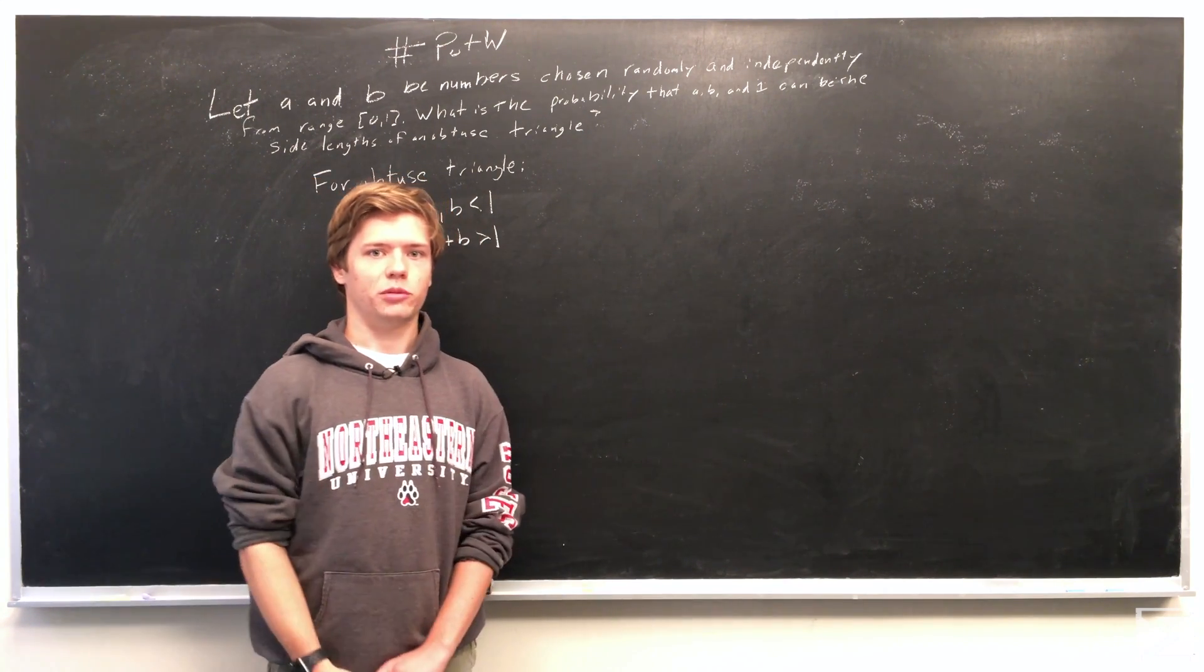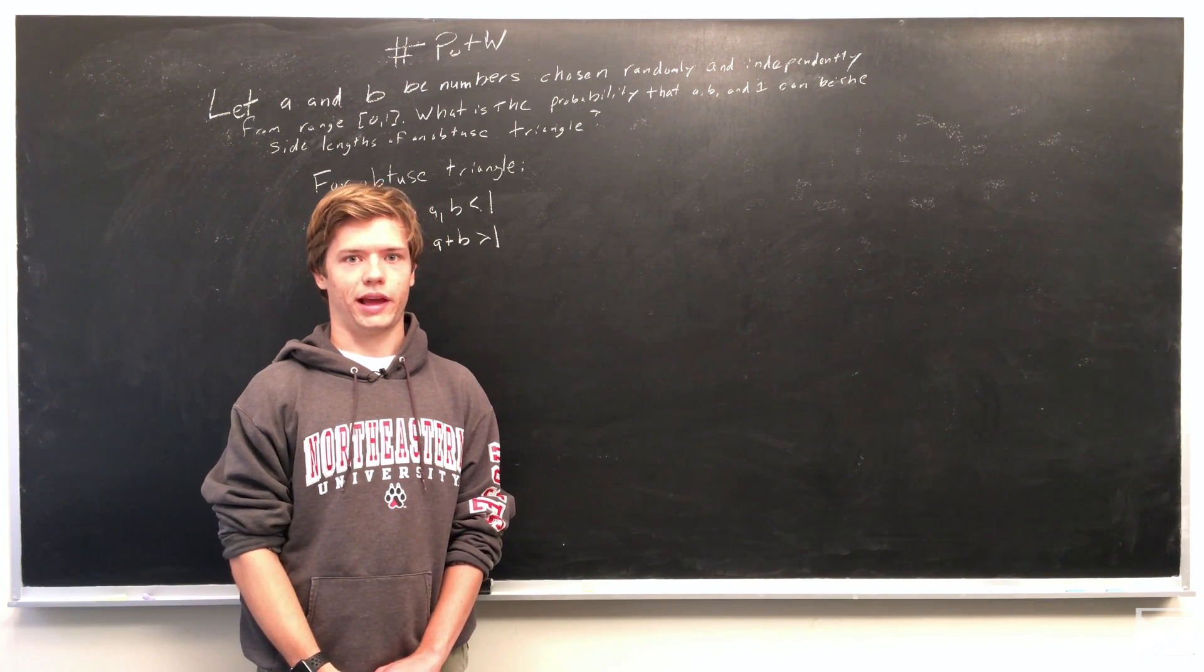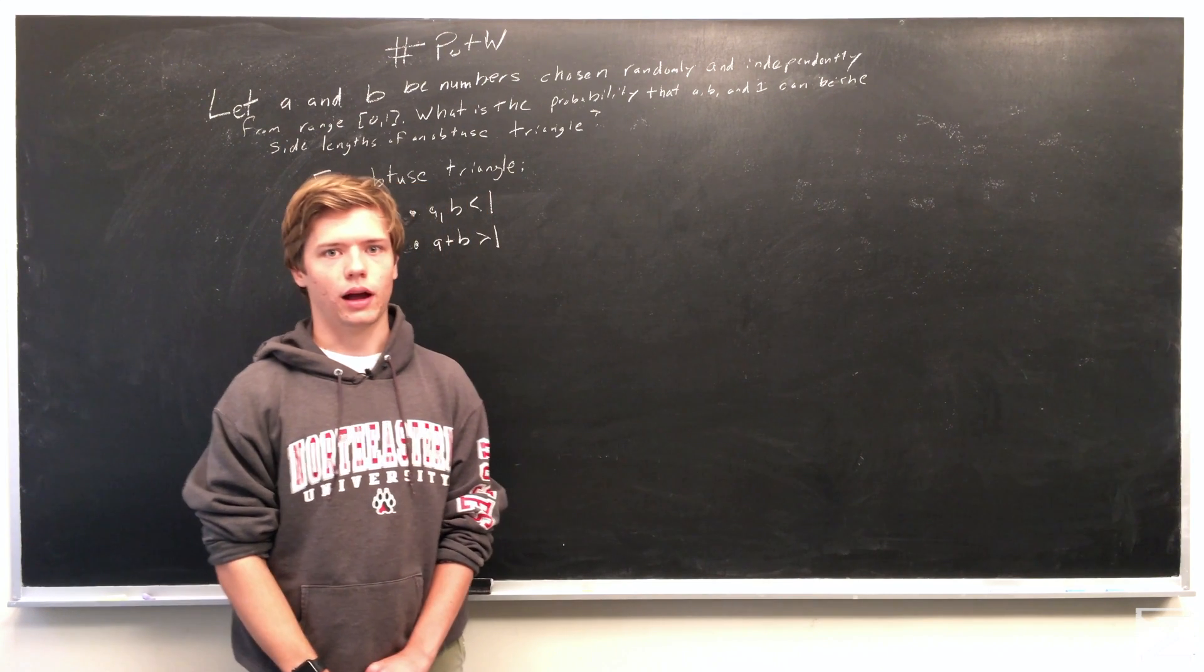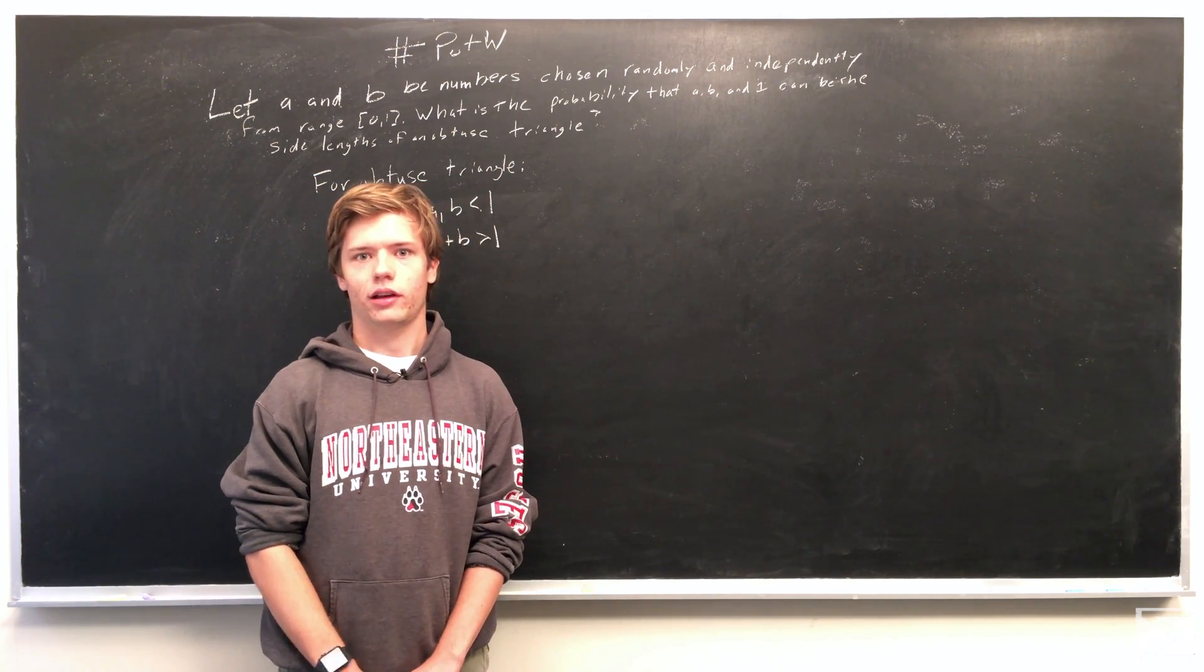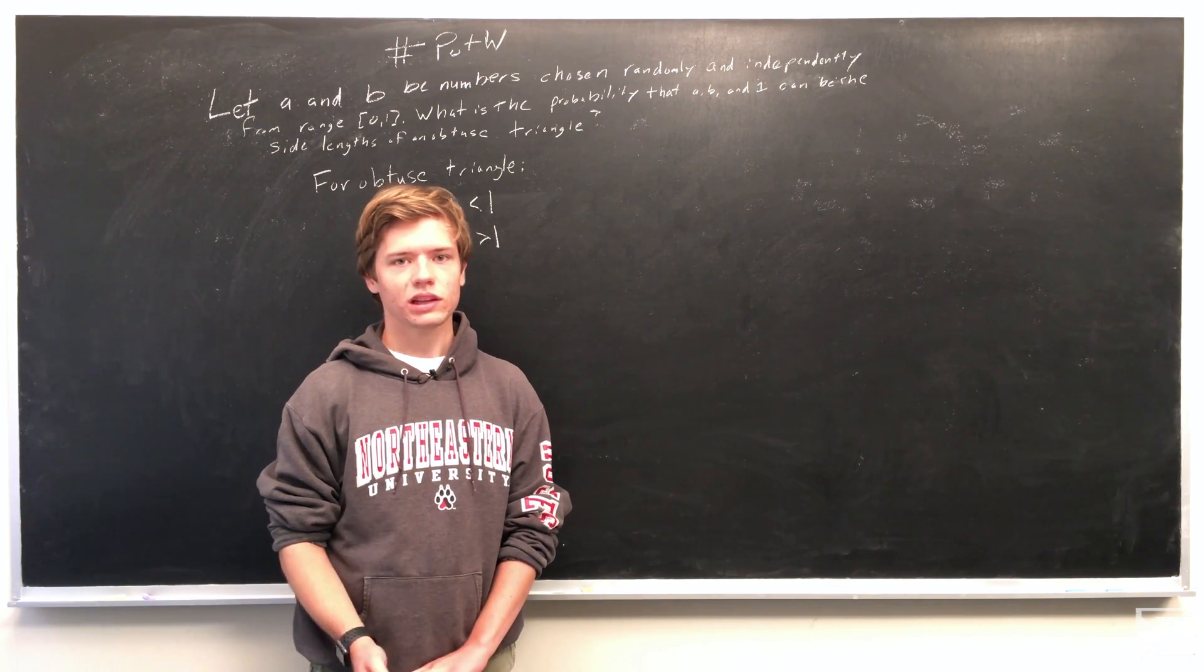Now to have an obtuse triangle, we need the property that A squared plus B squared is less than 1. As you know, the Pythagorean theorem states that for a right triangle, A squared plus B squared equals C squared.